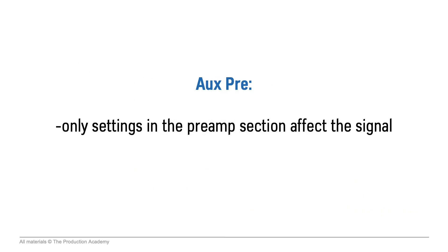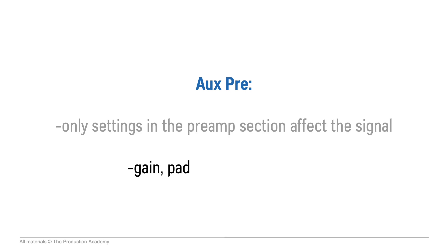So with an aux pre send, only the settings in the preamp section affect the signal. This includes not only the gain and pad, but also the polarity, high-pass filter, and insert. Keep in mind, this means that compressors and gates still affect the aux pre send. But if we make any adjustments to the EQ or to the fader, it does not affect the aux pre send.